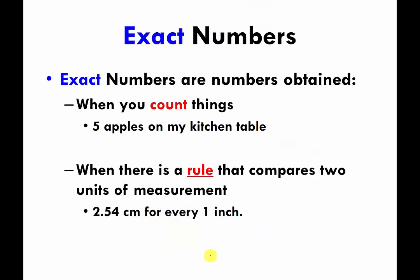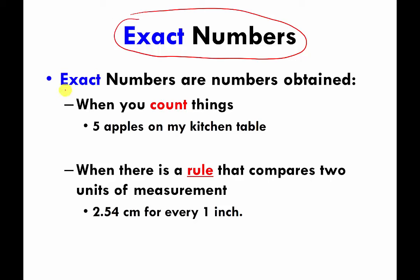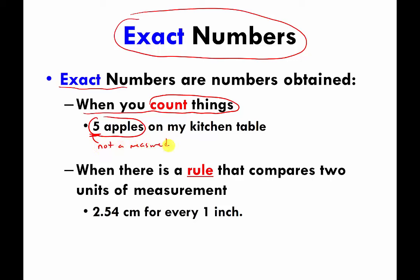So that's what a measured number is. There's a different kind of number called an exact number — think of it as kind of the opposite of a measured number. There are two types of exact numbers. The first type is exact numbers that you get when you count things. If I say there are five apples on my kitchen table, this number five is not a measured number — it's called an exact number. The reason it's exact is because I didn't use a device other than my eyes to get this number; I just counted.